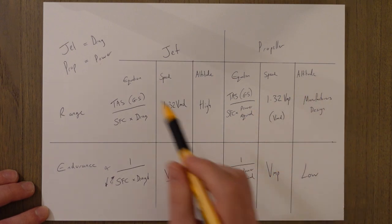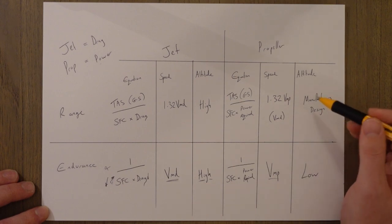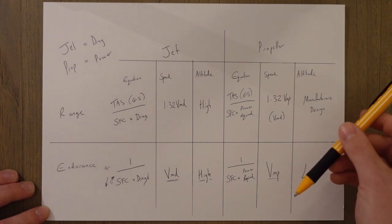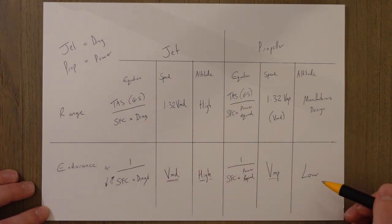For a propeller again we're just substituting in power required and we want to basically fly where our power required is the lowest, that'll be Vmp. And if we're lower down in altitude that means our drag curve moves down into the left so our speed at the bottom of that curve will be lower requiring less power and therefore we get a better endurance as a result.